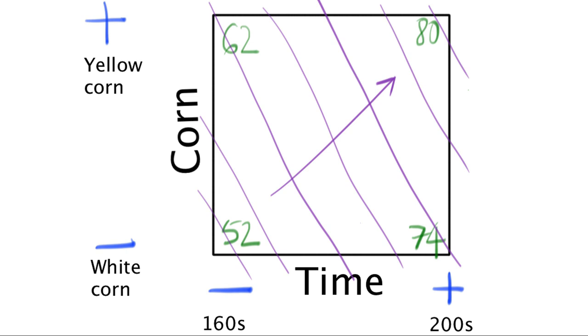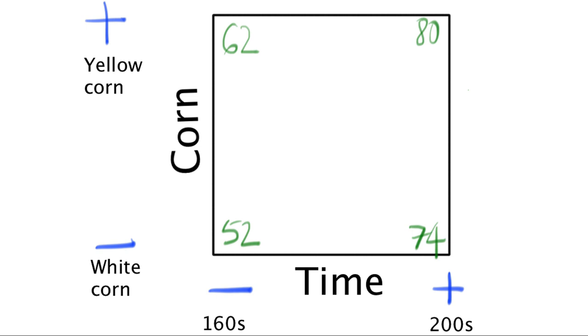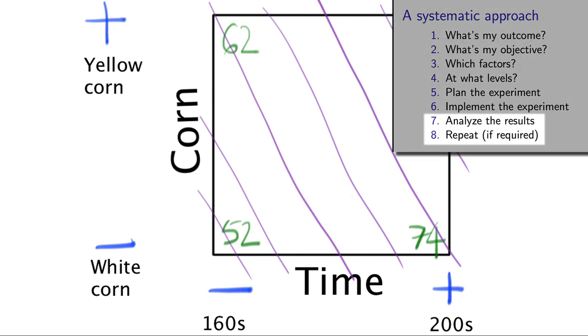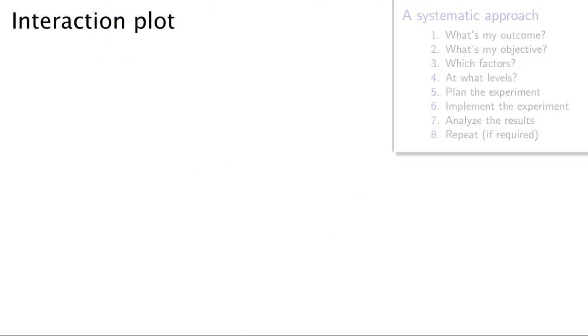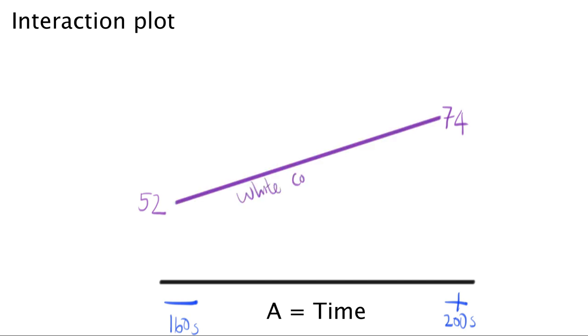In summary, we have seen two ways to visualize our data. One way is with a cube plot, with the values superimposed at the corners. The second method is to take the cube plot and add contour lines. I'm going to show you a third way before we end this class today. This plot is called an interaction plot, and you'll see why, especially in the next video. Put one of the variables at the bottom, with its low value and its high value in the horizontal direction. For example, when we use white corn, our outcome variable is 52 and 74 at the two settings of time. Let's use a solid line to connect them. For yellow corn, the outcome values were 62 and 80, and I will use a dashed line to connect those two. Notice that these two lines are roughly parallel.